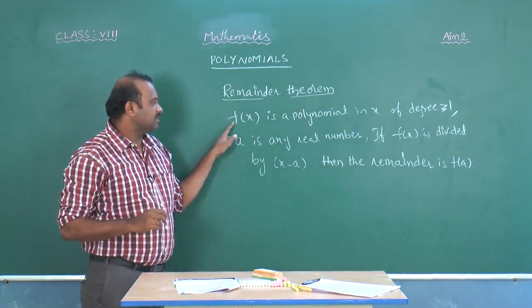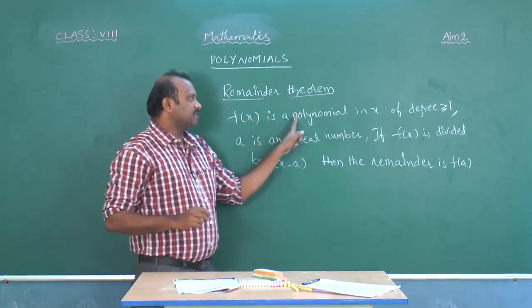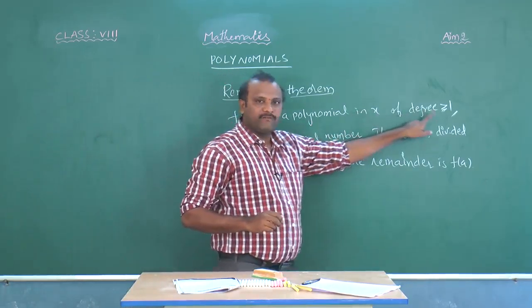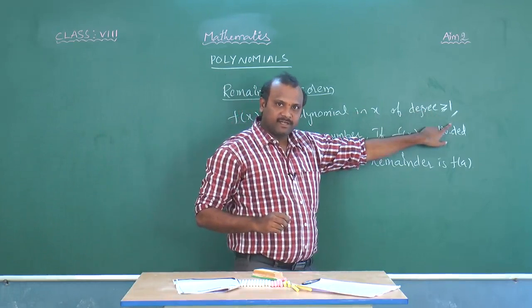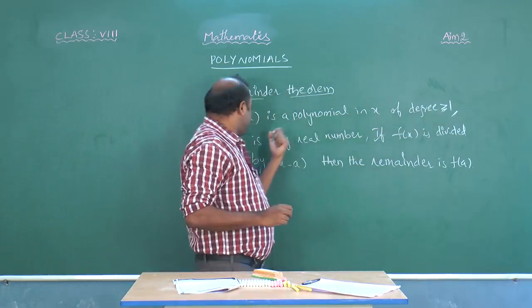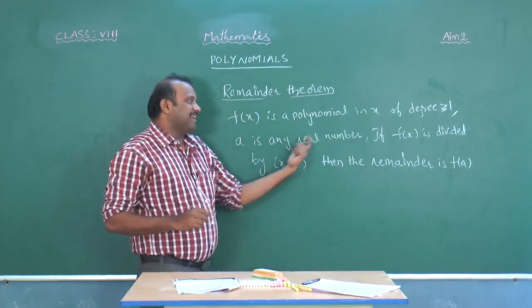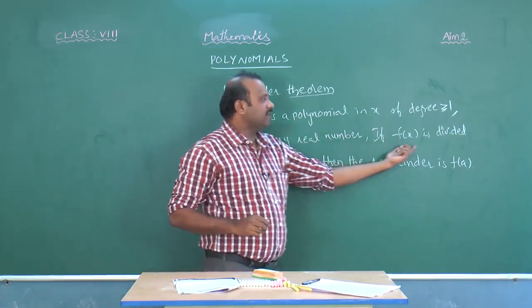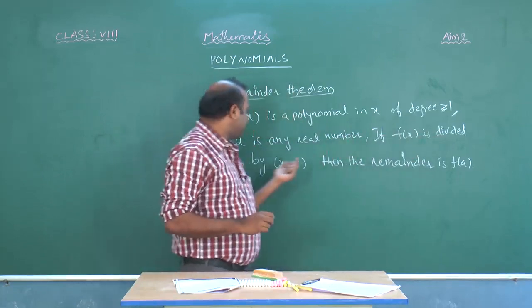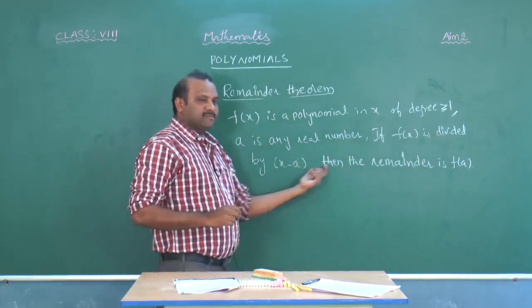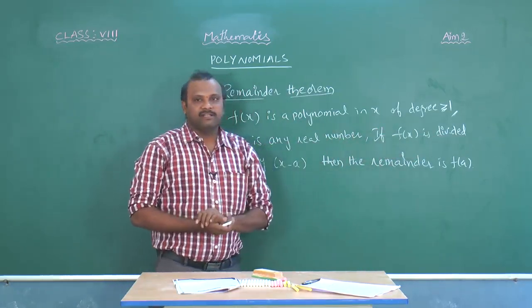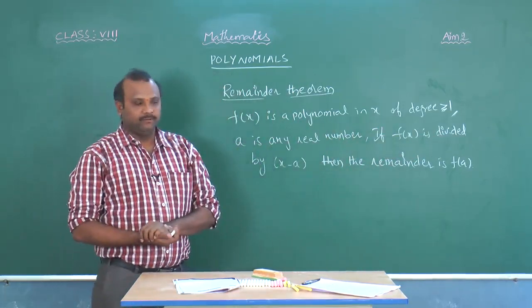Once again I will say the statement. F of x is a polynomial in x of degree greater than or equal to 1. A is any real number. If f of x is divided by x minus a, then the remainder is f of a.